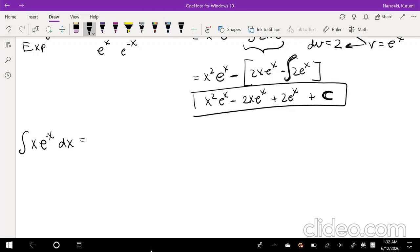But in order to do this, you do need to know that IBP. So we're going to set u is equal to our algebra, our x. Du is equal to dx. V is equal to e to the negative x. And the anti-derivative is equal to negative e to the negative x.